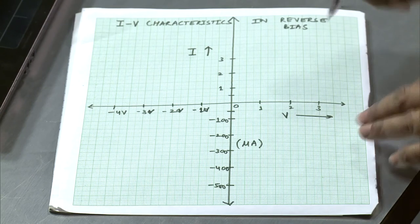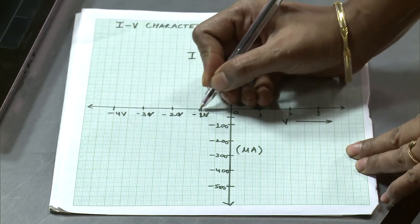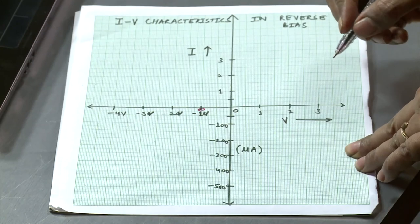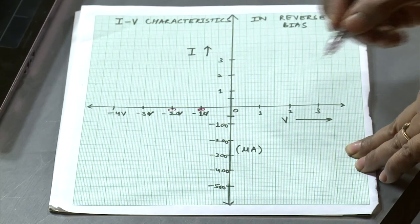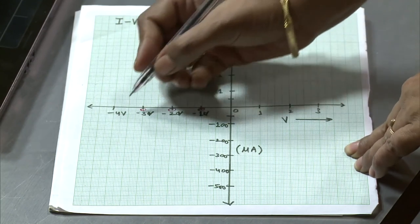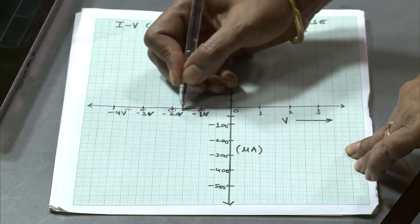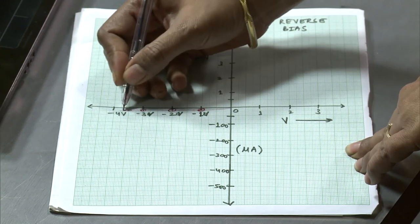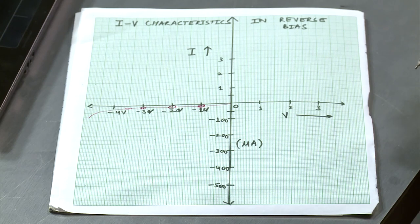Let's plot the readings. Corresponding to 1 volt in reverse bias, the current was 2.1 microamperes — negligibly small. For 2 volts, the value of the current raises to 5.9 microamperes, which is again very very small. For 3 volts, the value raises to 8.3 microamperes. For 3.4 volts, the value rises up to 32.9 microamperes. What is observed is that in the reverse bias, very small amount of current flows through the diode. Thus the diode offers a very large resistance to the flow of current in reverse bias. Unlike forward bias where conduction is possible, in reverse bias the diode does not conduct and acts like a switch.